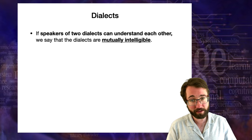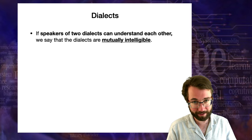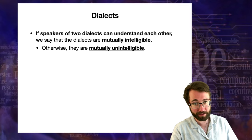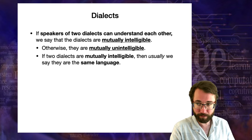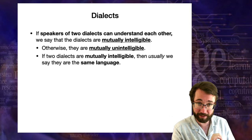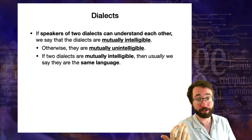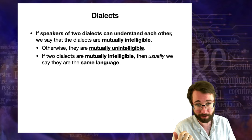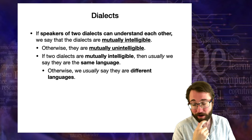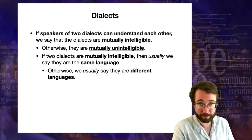If two speakers of two dialects can understand one another, we say that the dialects are mutually intelligible. Otherwise, we say they're mutually unintelligible. If two dialects are mutually intelligible, then usually we say they're the same language — but remember the complications and political factors. Otherwise, we usually say that they are different languages.